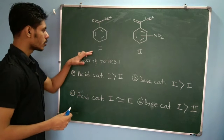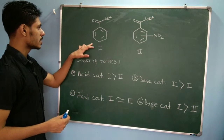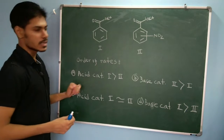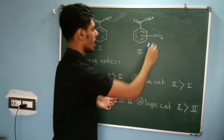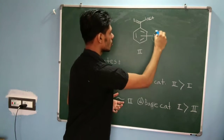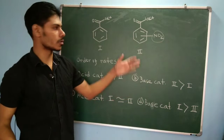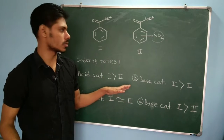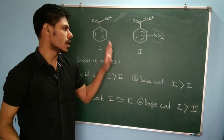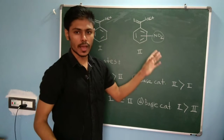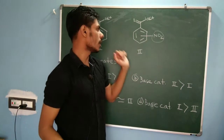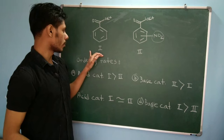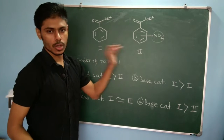You are given two compounds: a simple ethyl ester of benzoic acid, and then we introduce a nitro group at the ortho or para position of the ring. You can also introduce it at the meta position. In general, we introduce a nitro group in the benzene ring of the same compound, giving us compound 1 and compound 2.